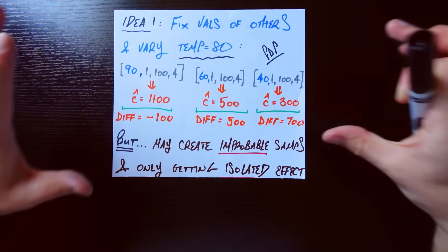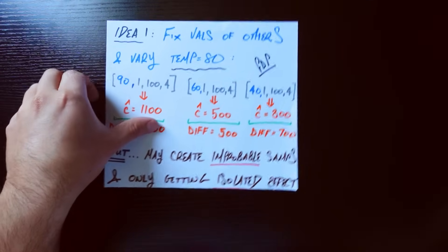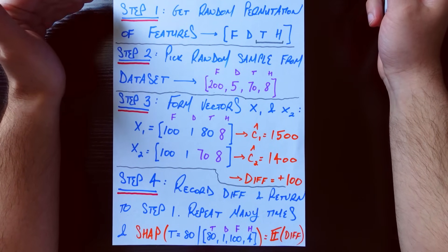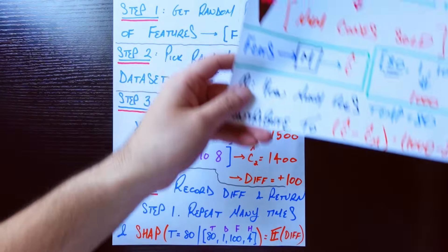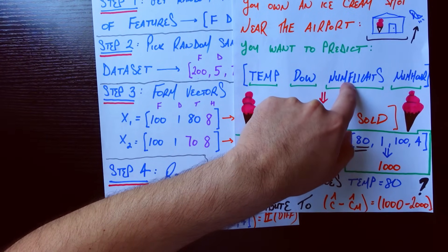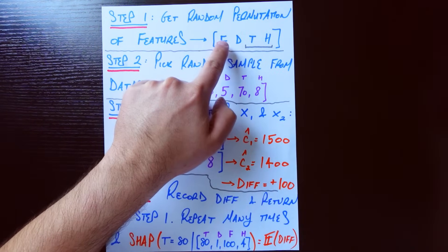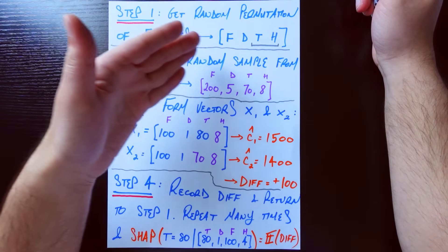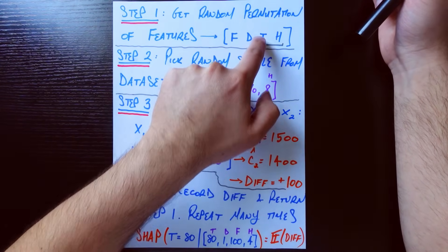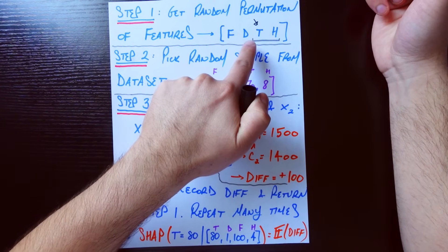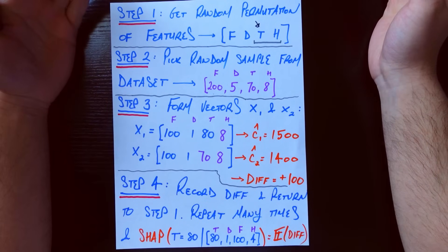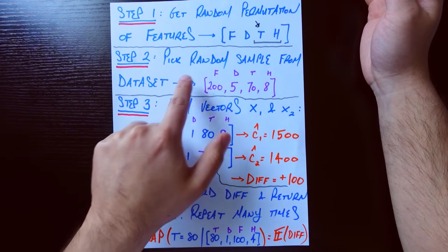It's important to talk about that technique because it leads us into Shapley values. The rest of this video is just going through the step-by-step process of Shapley values, focusing heavily on interpretation. Step one is to get a random permutation of the features. I've given them single letter names: T for temperature, D for day of the week, F for number of flights, and H for number of hours. A random permutation is just a random ordering of these features. We get one, and we put a bracket under temperature and everything to its right — in this case that's just H, the number of hours open that day.